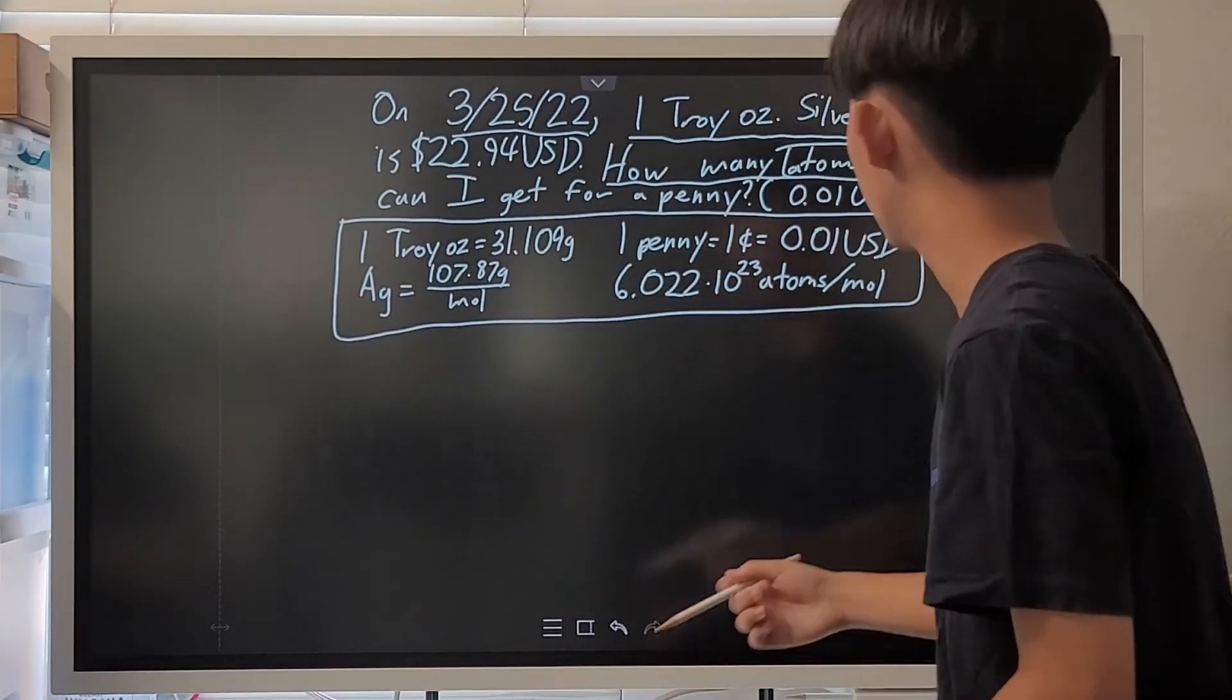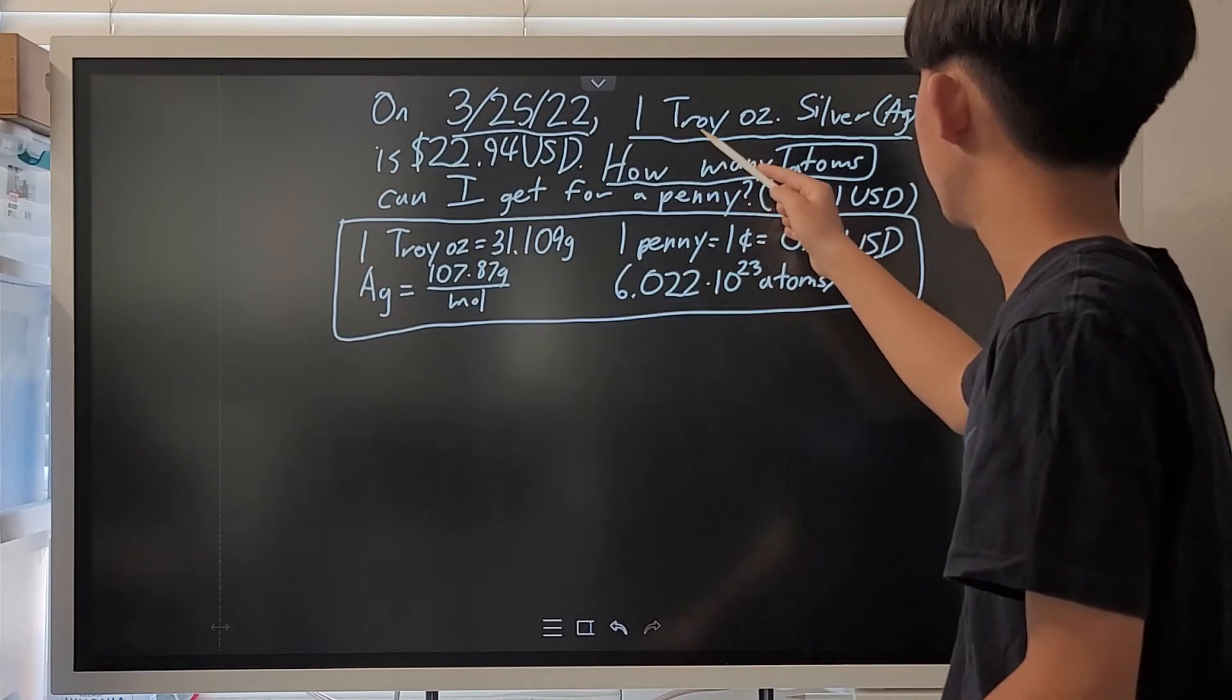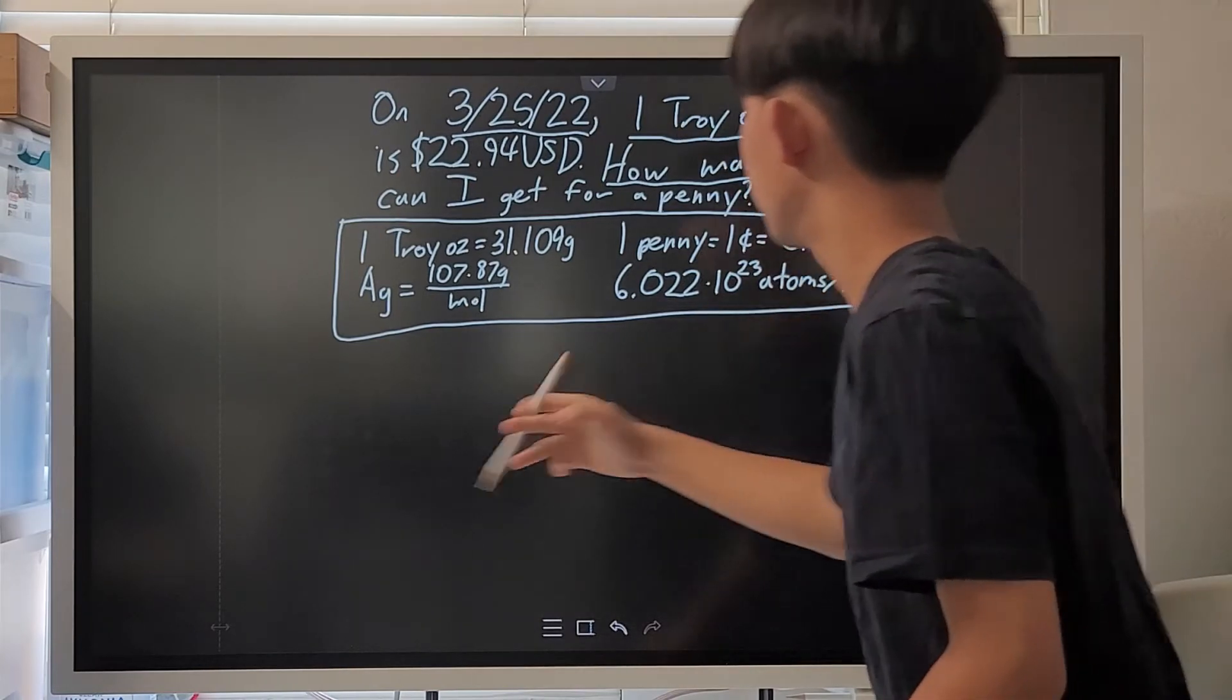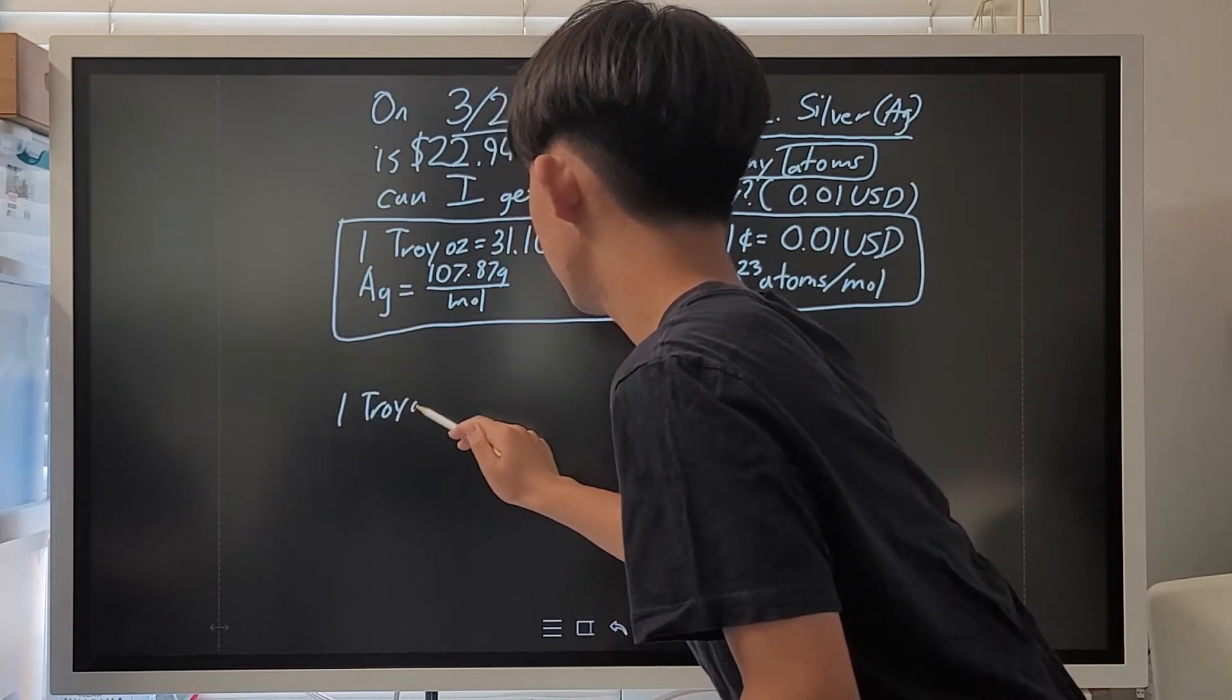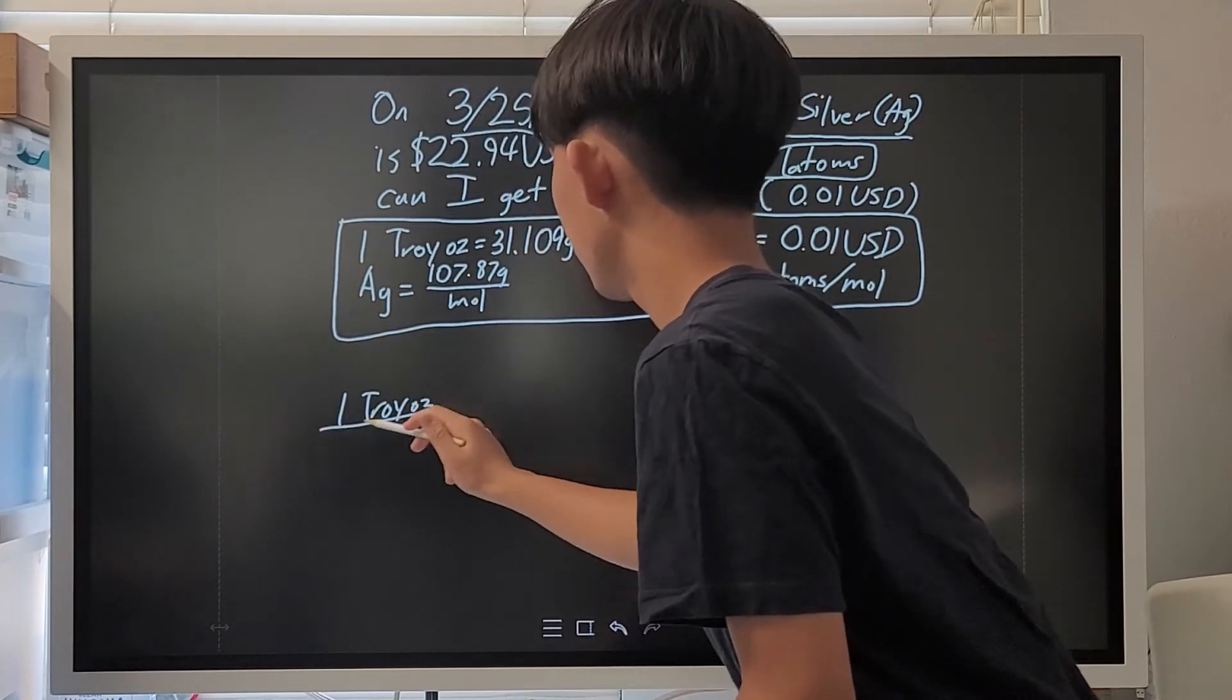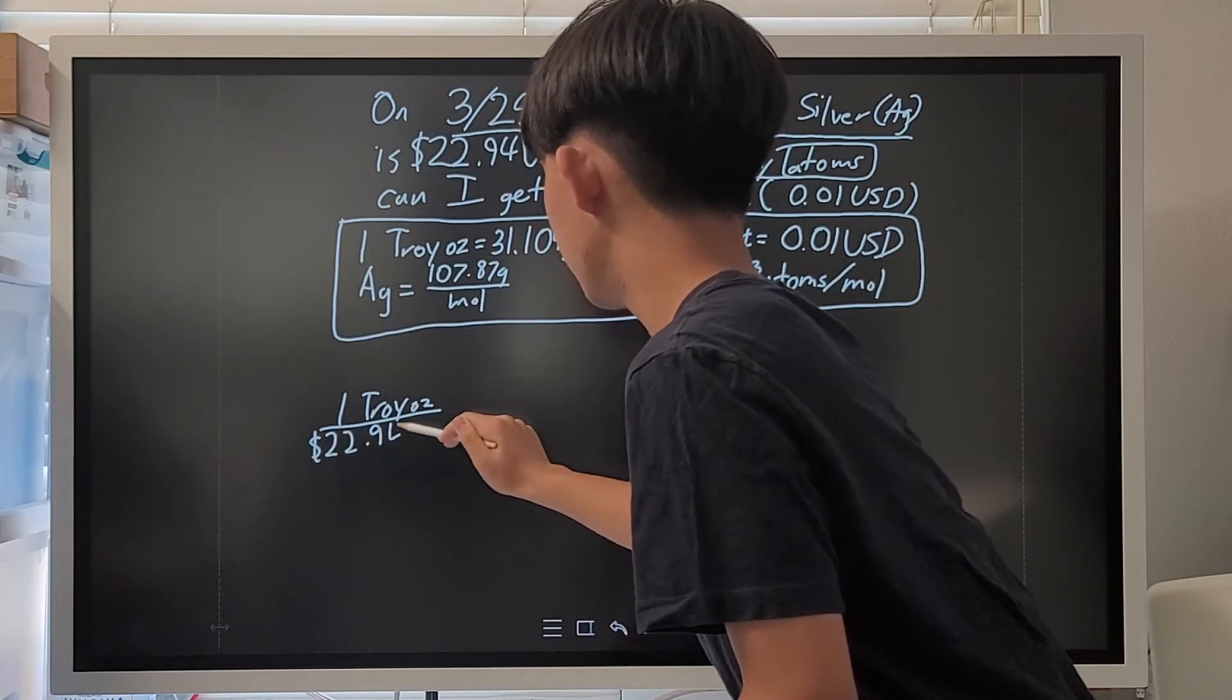So, to do the dimensional analysis, we first need to find the troy ounce per silver ratio, which is 1 troy ounce over $22.94 USD.